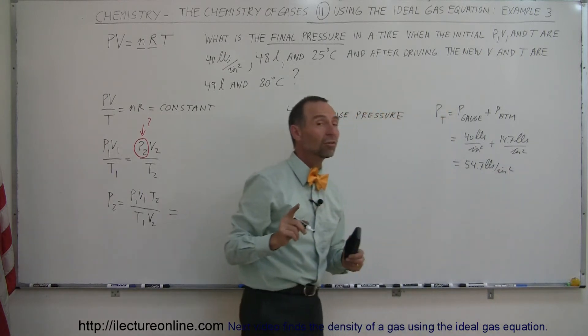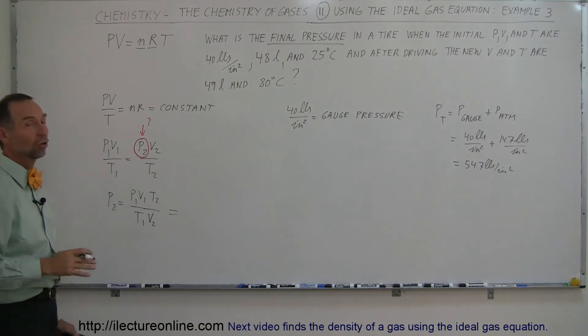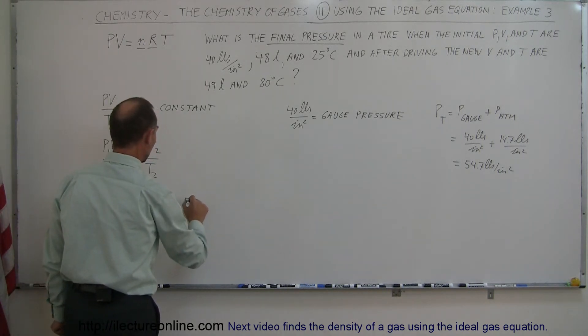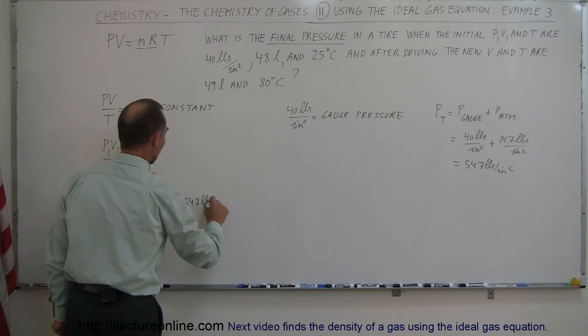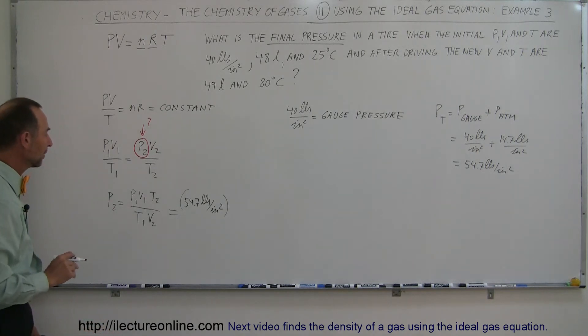So this gives us 54.7 pounds per square inch. Always, when you use the ideal gas equation, you must put in the total pressure, not just the gauge pressure. So P1 will be 54.7 pounds per square inch, and if we leave it in these units, we'll get our answer in terms of pounds per square inch, so that's quite all right.